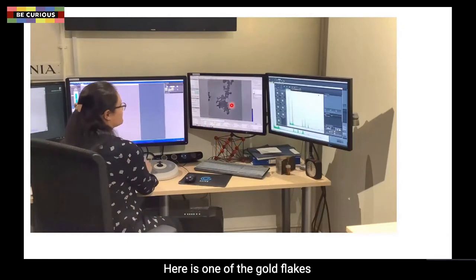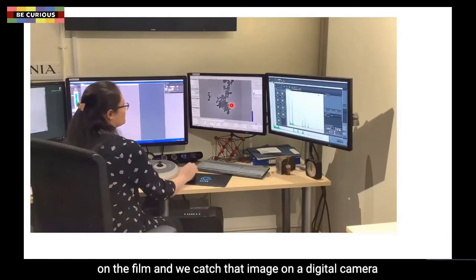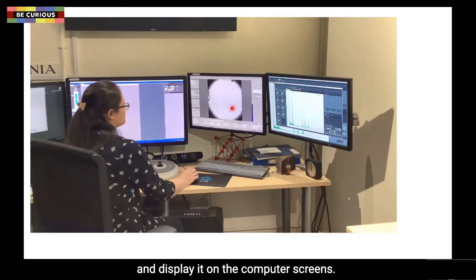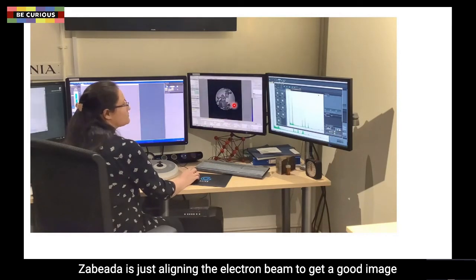Here is one of the gold flakes on the film and we capture that image on a digital camera and display it on the computer screens. So Beda is just aligning the electron beam to get a good image.